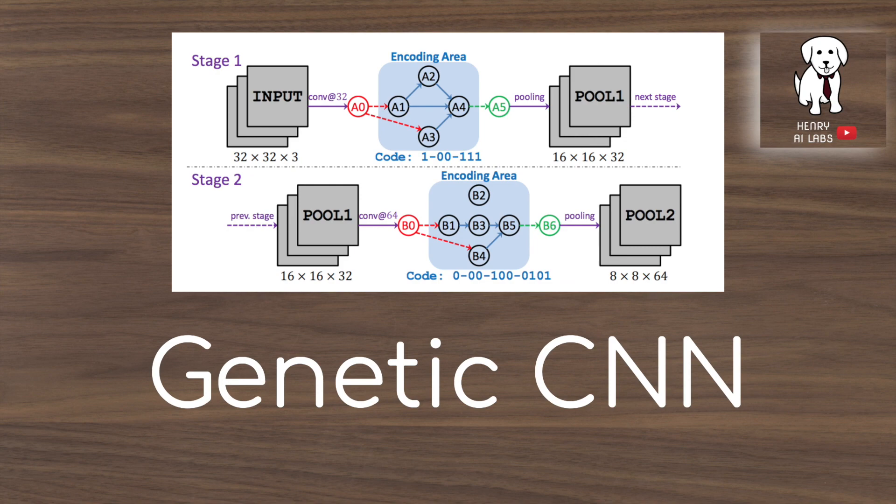Thanks for watching this video on the Genetic CNN. This is a great algorithm for getting started with neuroevolution and representing neural networks as bit strings. Please subscribe to Henry AI Labs for more deep learning and artificial intelligence videos.